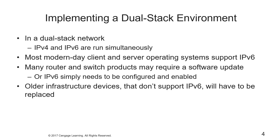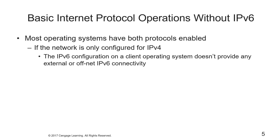Many router and switch products have had IPv6 capability for even longer, but they might require a software update or IPv6 simply needs to be configured or enabled. Older infrastructure devices might not support IPv6 at all and you'll have to replace them. Most operating systems have both v4 and v6 enabled, but if the network is only configured for v4, the v6 configuration on a client OS doesn't provide any external or off-net v6 connectivity.